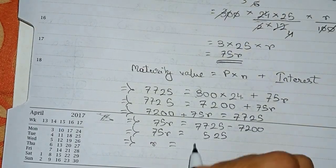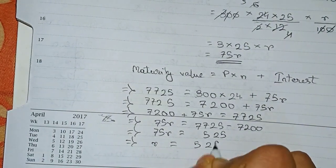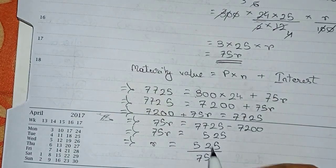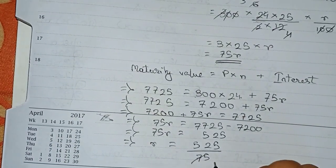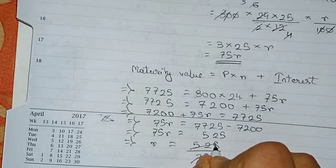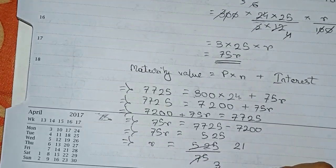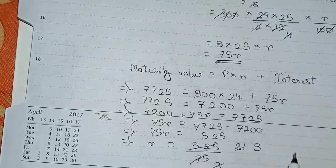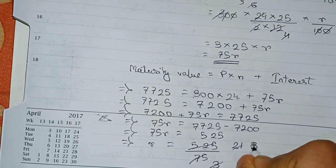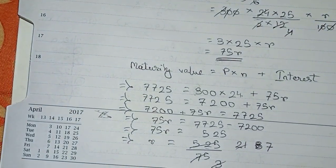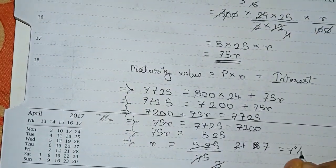r is equal to, so now 75 will go for division here, so 525 by 75. Start cutting by 25. 25 threes are 75, 25 twos are 50, 25 ones are 25. And 7 threes are 21. So our rate of interest we got as 7 percent.